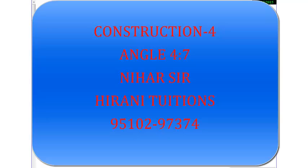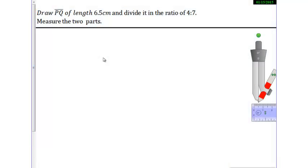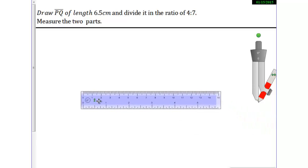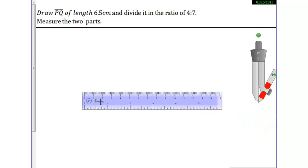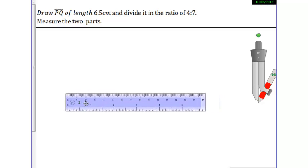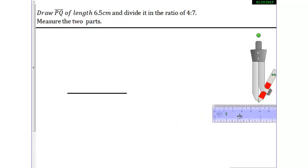Hello friends, in this video it's a very easy construction. First we have to draw a line of 6.5 centimeters and divide it in the ratio 4:7. So we are drawing the line with 6.5 cm measurement, starting from 0. It's 6.5 — perfect. The line is named PQ, and I think this is the easiest construction.